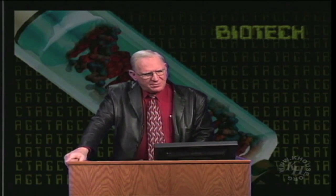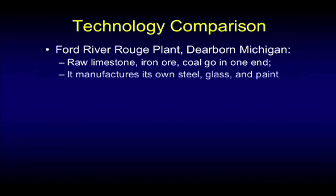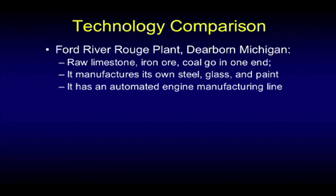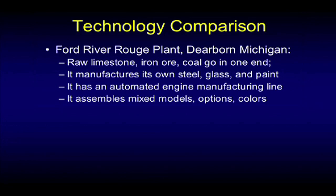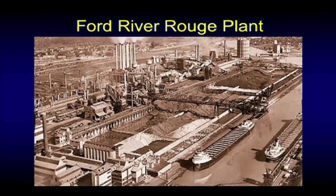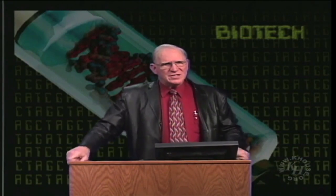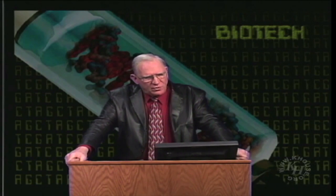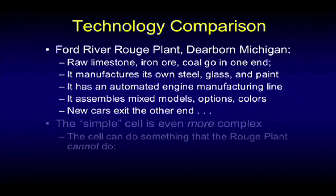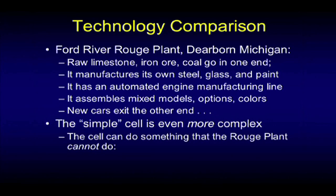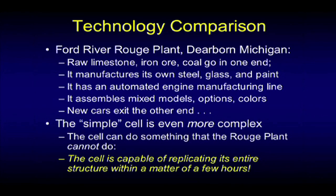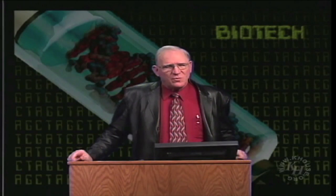Let's make a technology comparison. The Ford River Rouge plant takes raw limestone, iron ore, and coal in one end, manufactures steel, glass, and paint, has an automated engine manufacturing line, assembles mixed models with options and colors, and new cars exit the other end. The simple cell is more complex than the Ford River Rouge plant in Dearborn, Michigan. And the cell can do something the River Rouge plant can't do — it can replicate its entire structure within a few hours.